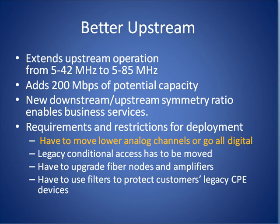DOCSIS 3.0 increases bandwidth speeds using several techniques. In the upstream direction, a portion of the bandwidth from the 42 MHz to the 85 MHz block has been reclaimed in order to provide additional bandwidth in the upstream direction. In order to make use of this bandwidth, however, cable companies must first move the analog channels that currently reside in this portion of the bandwidth or convert them over to an all-digital format.